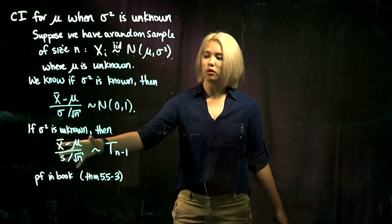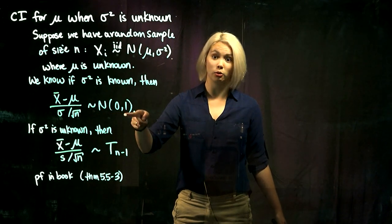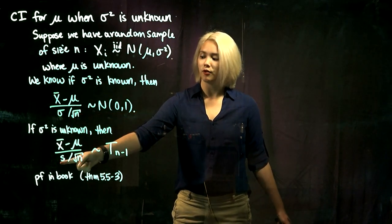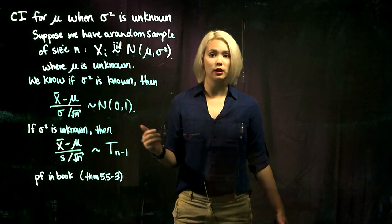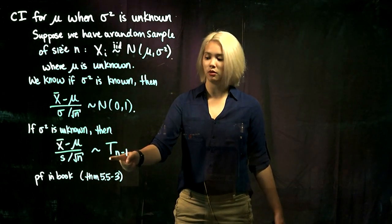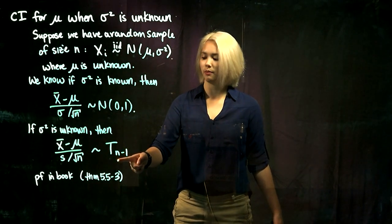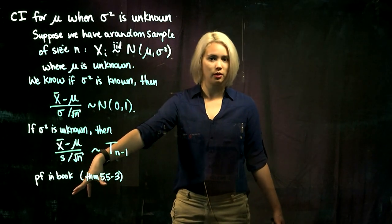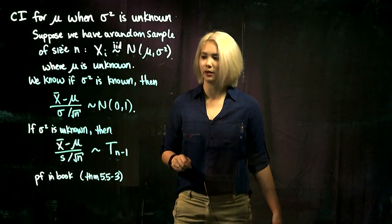This quantity is no longer going to follow a standard normal distribution because we've swapped out sigma for s. Instead, it's going to follow what we call a t-distribution with n minus 1 degrees of freedom. If you want the proof of this, you can look in the book — it's Theorem 5.5.3.